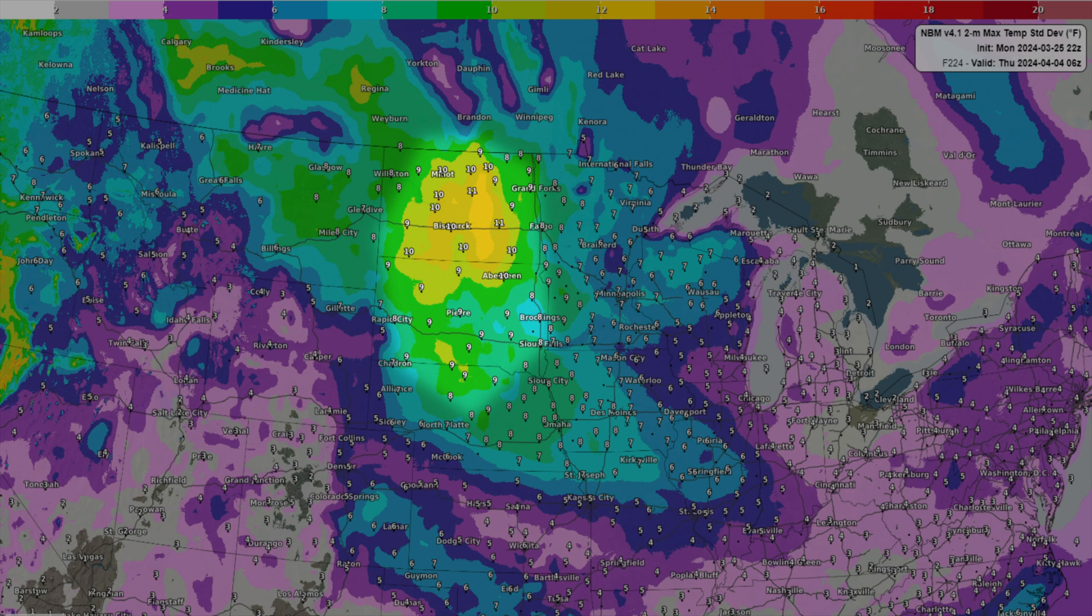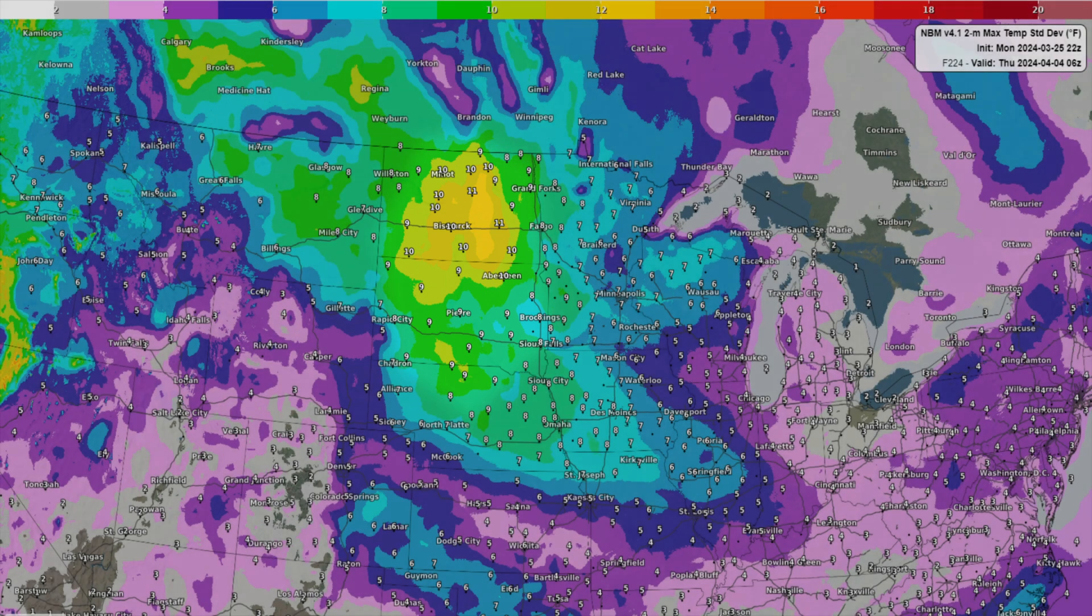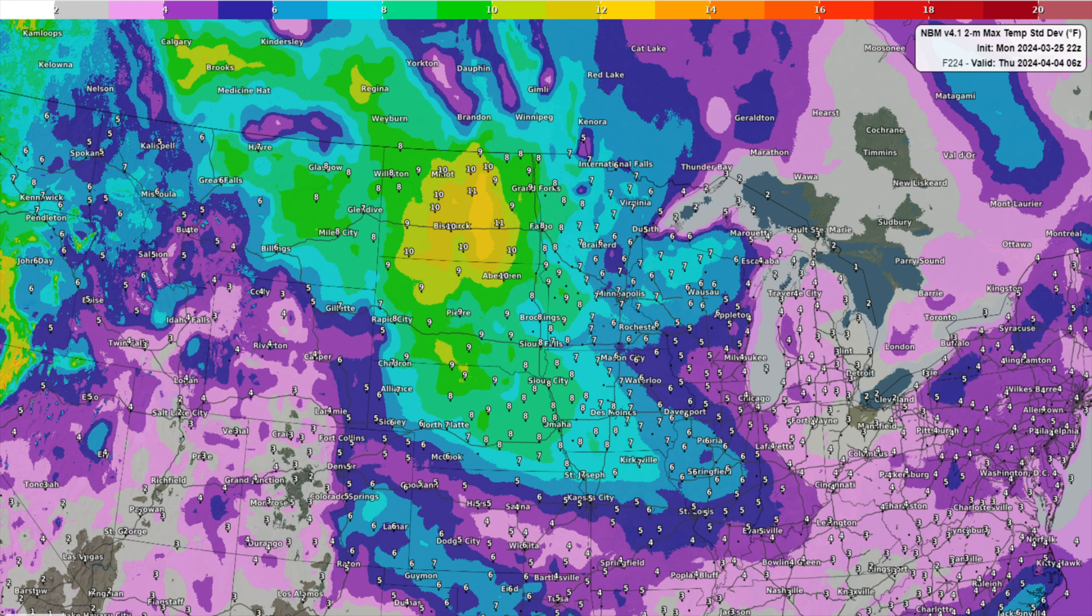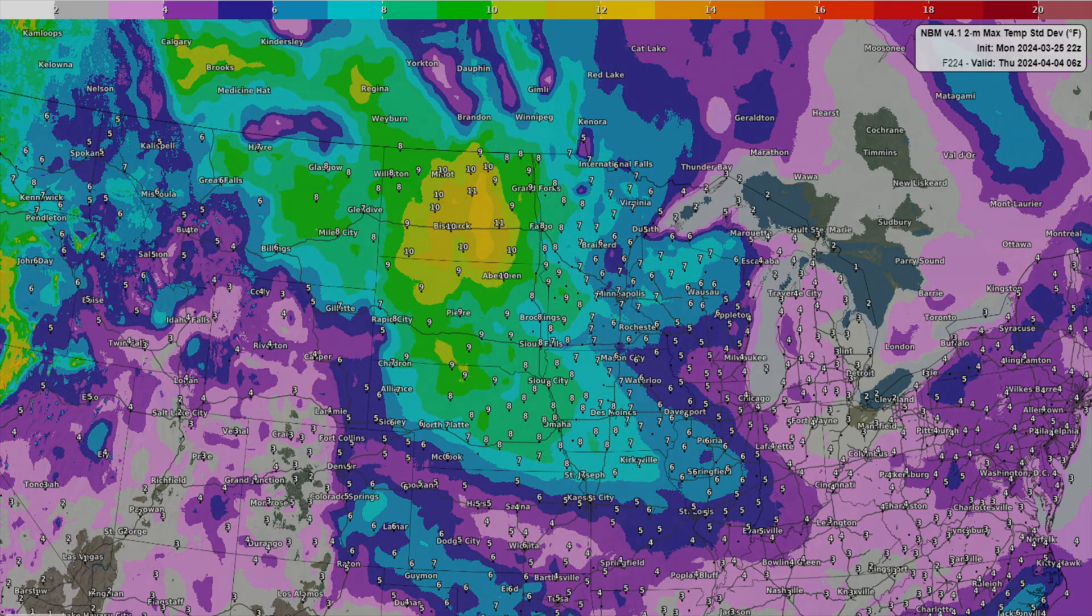The result is an area of high standard deviation located across North Dakota extending southward into Nebraska. An area of standard deviation from 10 to 12 is located across east central North Dakota, so let's take a closer look at that by clicking on the value for Jamestown, North Dakota and loading the 1D viewer perspective.